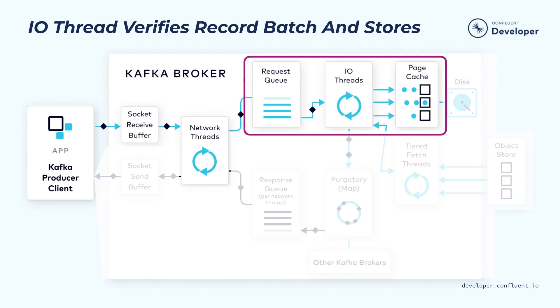From there, the request will be picked up by the second main pool in Kafka — these are called I/O threads. Unlike the network thread, each I/O thread can be used to handle requests from any client. So all of those I/O threads will be diving into this shared request queue and grabbing the next request that's available. The I/O thread will handle the produce requests by first validating the CRC of the data associated with the partitions, and then appending the data associated with the partition to a data structure which we call a commit log.